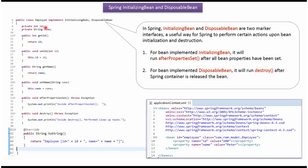In this example, after setting the id and name properties of the employee object, the Spring container calls the afterPropertiesSet method. And once the employee object is released by the Spring container, the Spring container calls the destroy method.